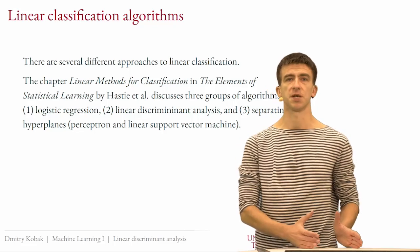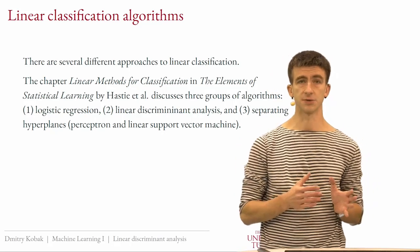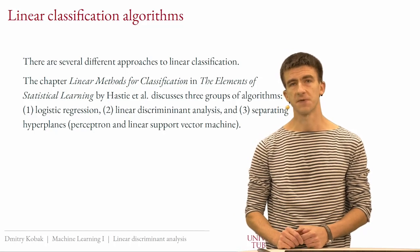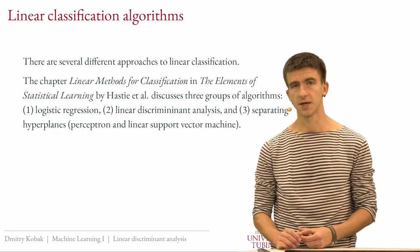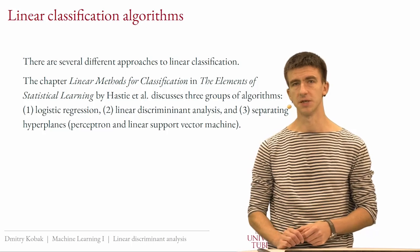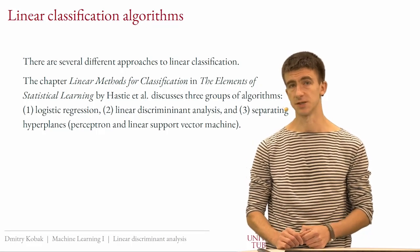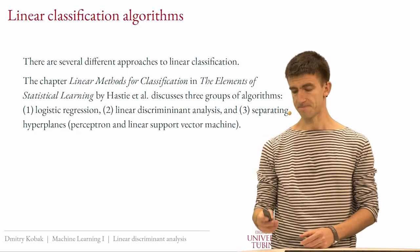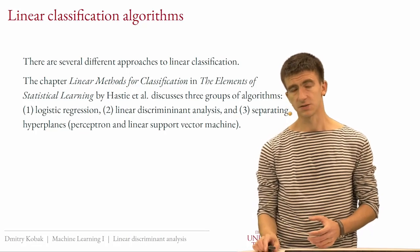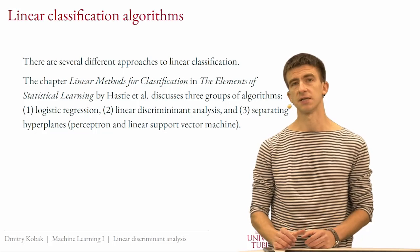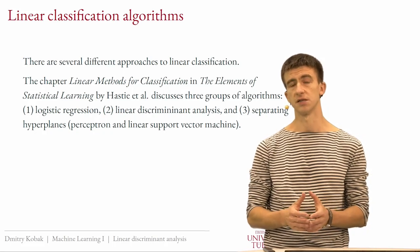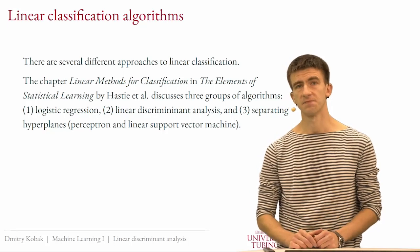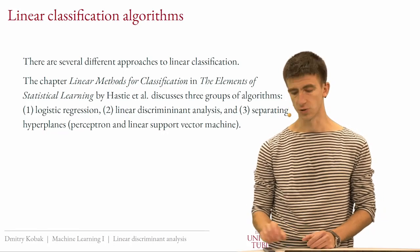Interestingly, the previous chapter is called linear methods for regression and it only talks about linear regression. I don't have a very good answer for why there are more approaches to linear classification than to linear regression — part of it might be tradition, or it could be that predicting a categorical variable allows for several natural approaches.